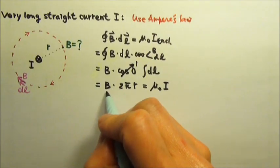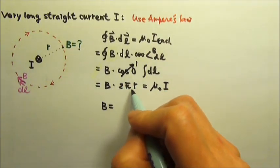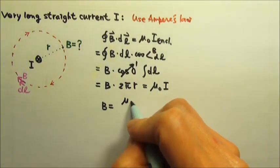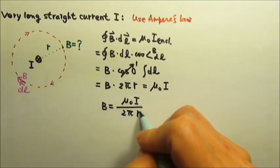Therefore to find the magnetic field B, all we have to do is divide by 2πr on both sides. So the magnetic field is μ₀i divided by 2πr.